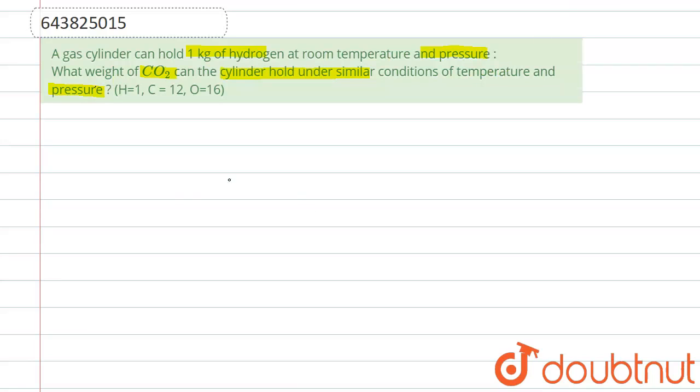So let us see. We know that if we talk about STP, at STP one mole of any gas occupies 22.4 liter volume. So what we write is: at STP, one mole of any gas occupies 22.4 liters.